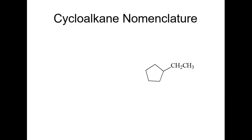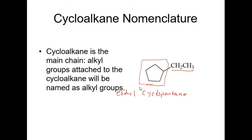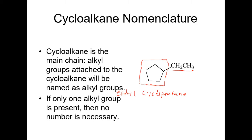Nomenclature. Very straightforward. Your parent compound is your cyclical compound. Not always, but most cases. This is my parent. So this is a cyclopentane. And I have an ethyl group. So this is called ethylcyclopentane. Nothing too hard here. It's the main chain. Alkyl groups attached to the cycloalkane will be named as the alkyl group. If only one alkyl group is present, there's no need for a number. I don't have to put one-ethylcyclopentane because there's only one group on there. I don't have to distinguish between where on the ring it is because it's the only group. Ethylcyclopentane.